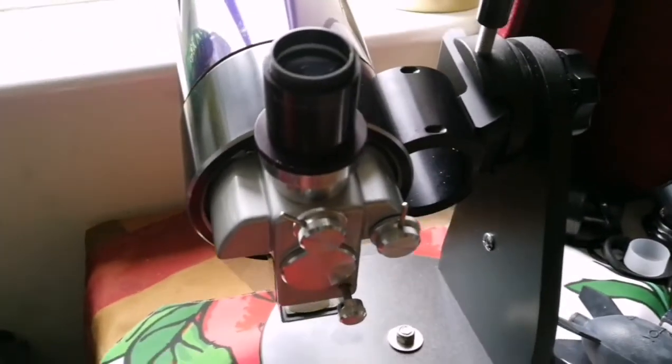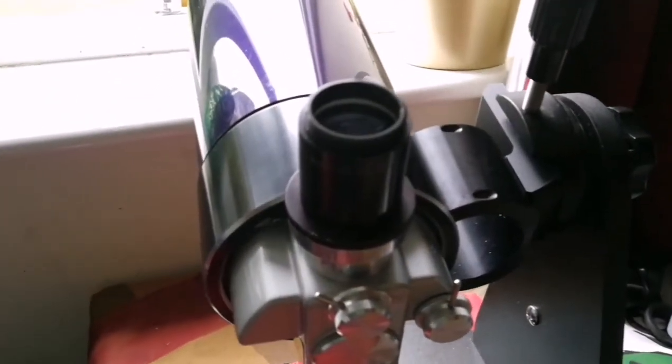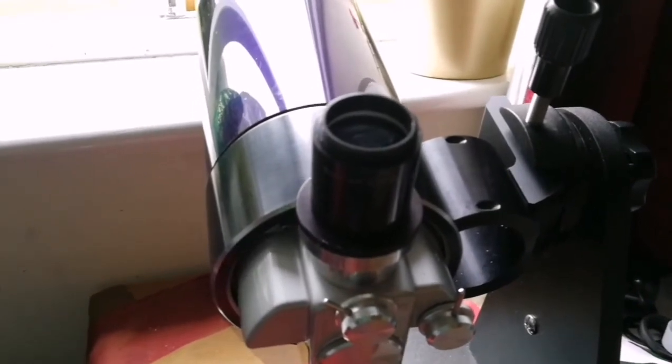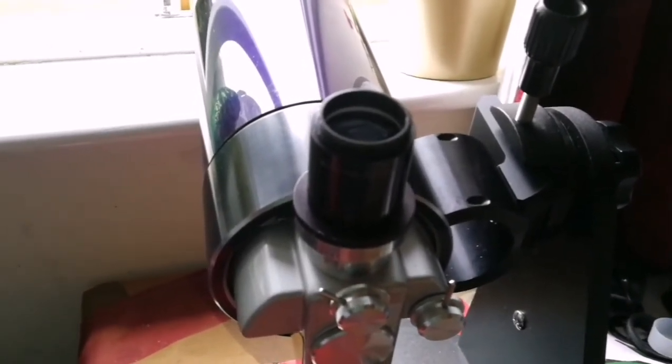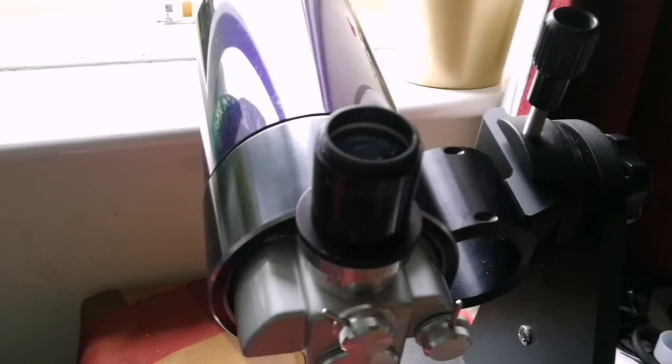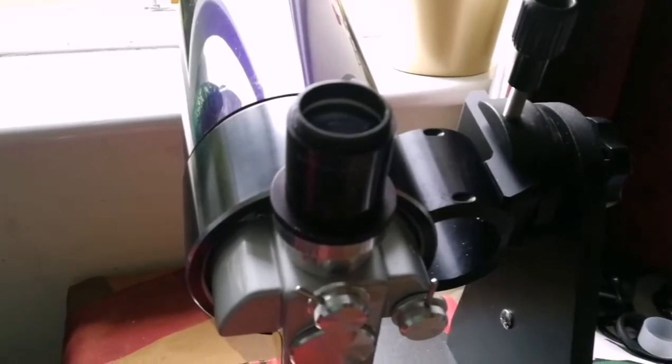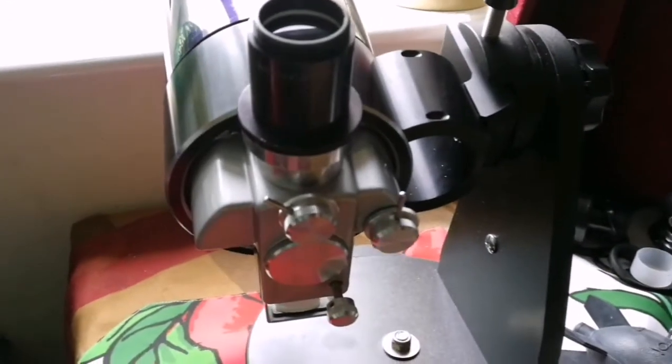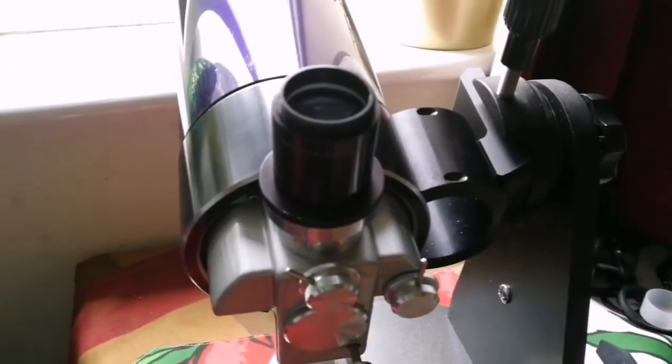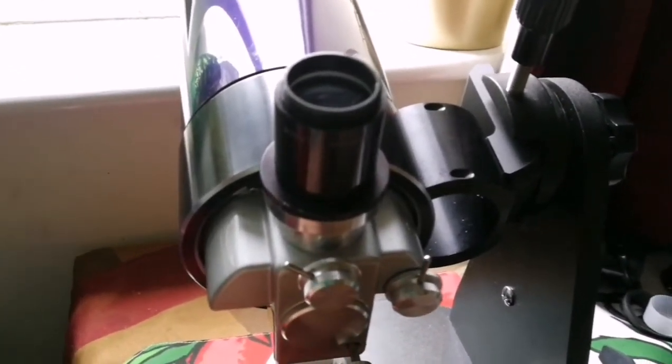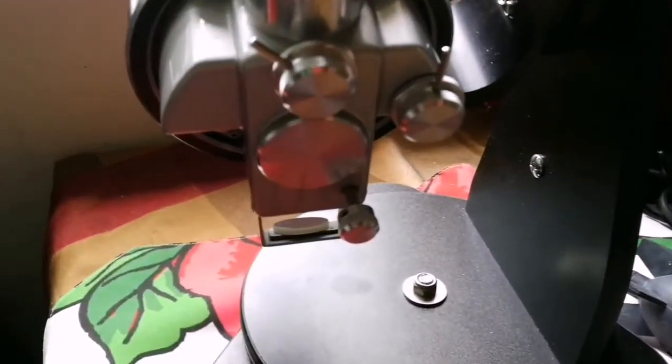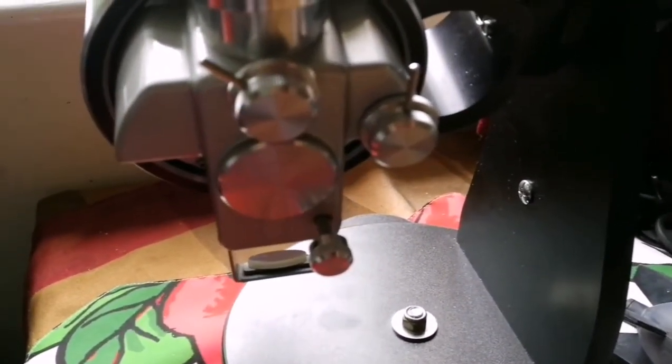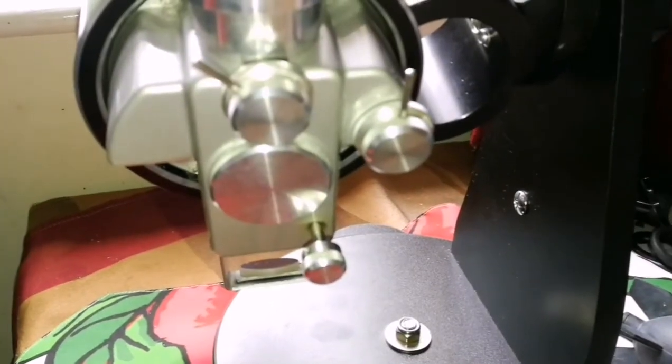If you ask me which one I prefer, I have Celestron Mak C90, I have the Meade ETX-90. And I think that mechanically this is built better. It's smoother, it's easier to operate with. Those ones are good, but for example, the focuser in this one is really easy. It's far more better than anything that I've seen with those ones.